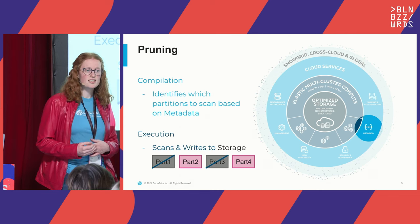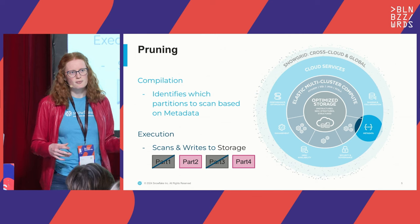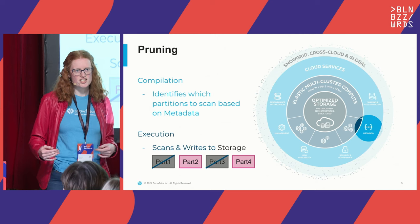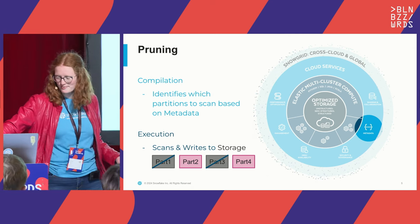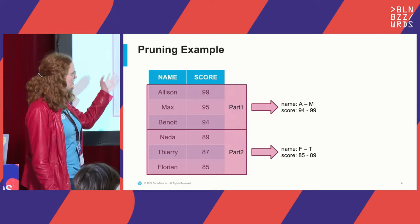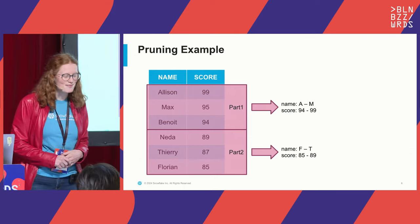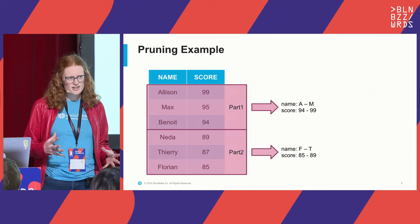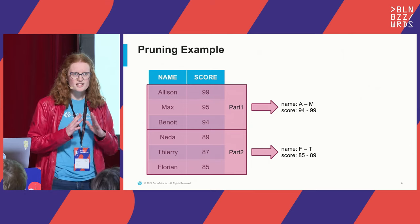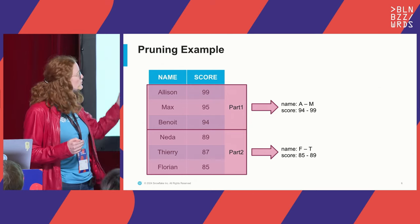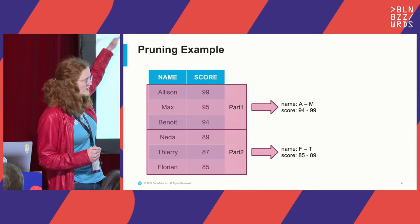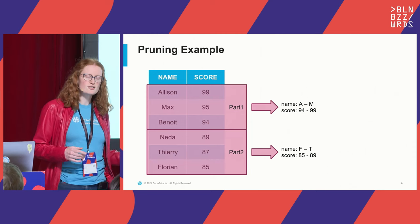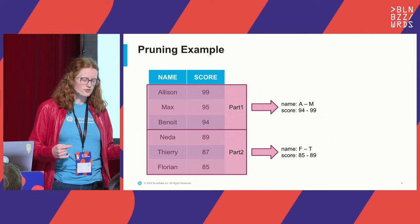Pruning identifies which data partitions have to be scanned. We have metadata available in the service layer, separate from the main data, and based on that we can decide which partitions need to be scanned and which can be skipped. For example, imagine a table storing scores and names. For each column in each partition — each red block is a partition — we have the min and max value. So we know the scores in partition one go from 94 to 99, and the names go from A to M.